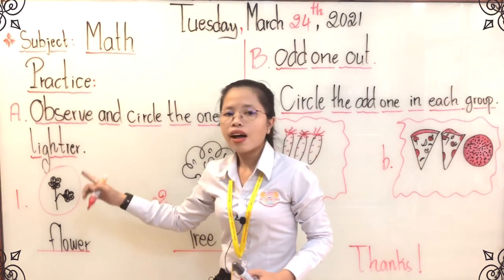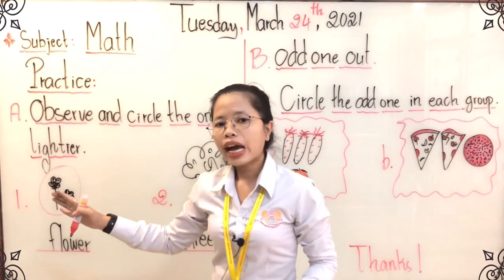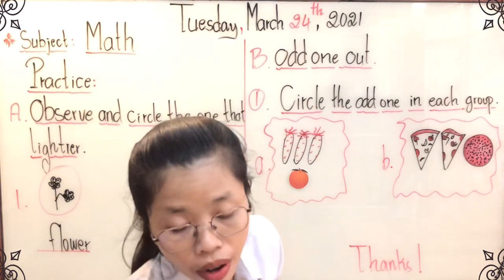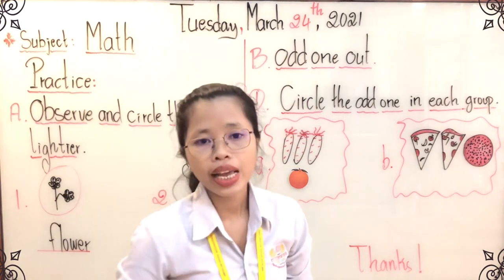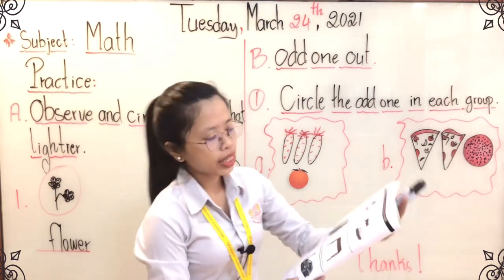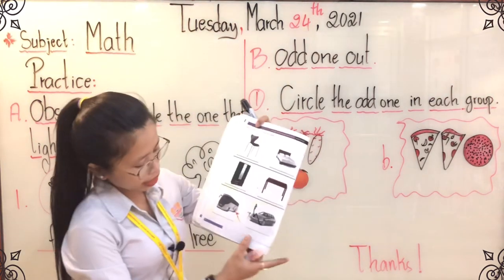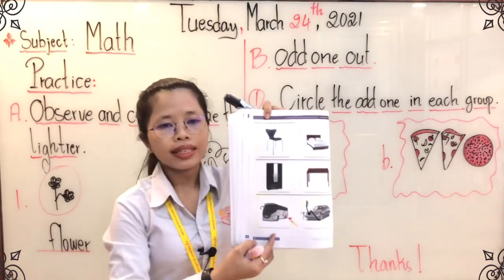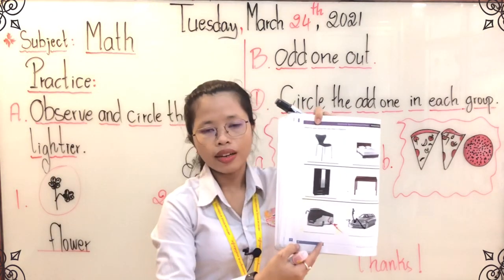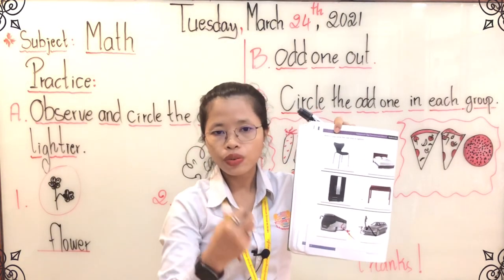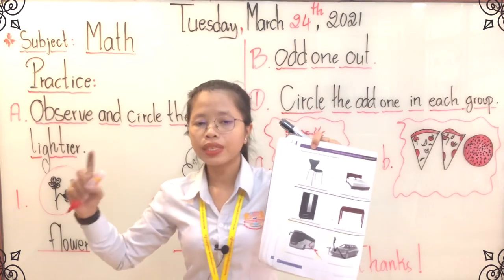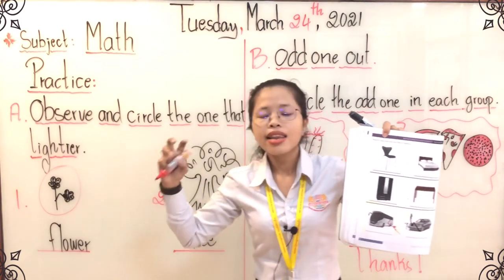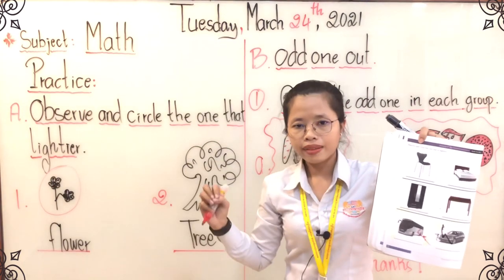Excellent! So we have done the activity on the whiteboard. And when you stay home, you can practice. It is on our page — page as shown in this video. You have to practice by observing and circling the one that is lighter.